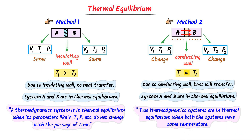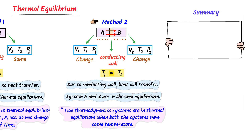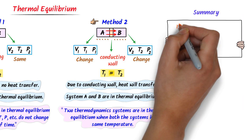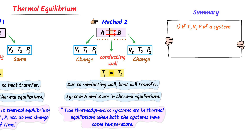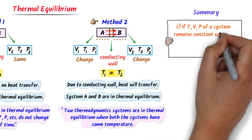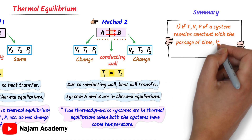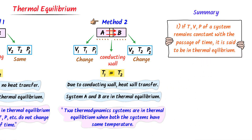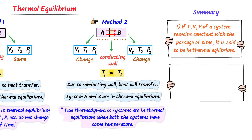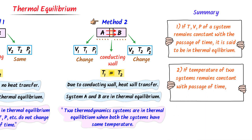Therefore, two thermodynamic systems are in thermal equilibrium when both systems have the same temperature. System A and system B are in thermal equilibrium because they have the same temperature. To conclude: first, if temperature, volume, pressure, etc. of a system remain constant with the passage of time, it is said to be in thermal equilibrium. Second, if the temperature of two systems remains the same and constant with the passage of time, they are said to be in thermal equilibrium. Note down these two important concepts.